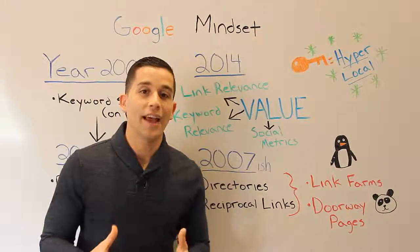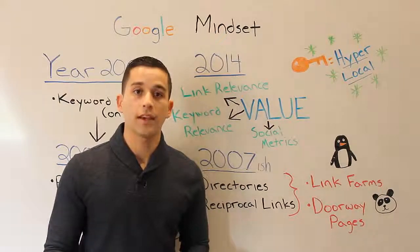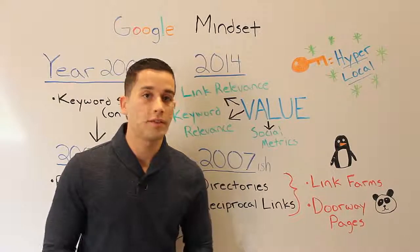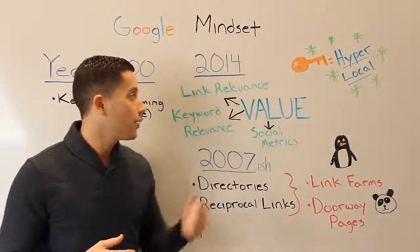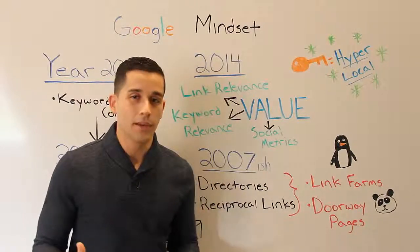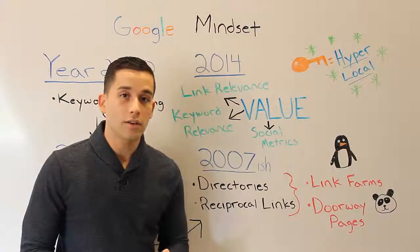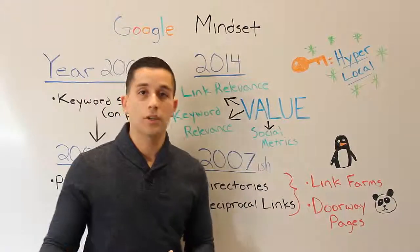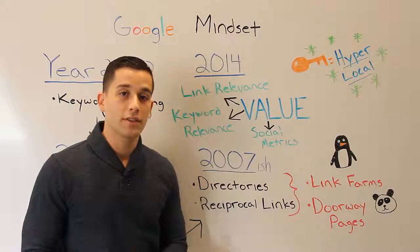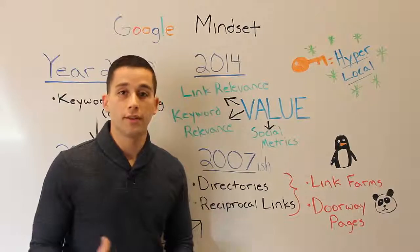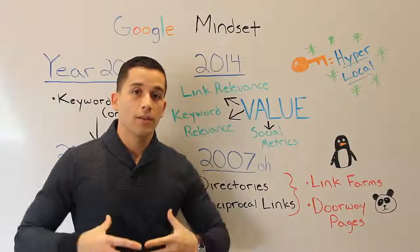The mentality you need to have is to focus on value — how do I provide value to the people coming to my site? These are people looking to buy, sell, or invest in homes, and other real estate agents. When you focus on value instead of manipulation, good things happen naturally: people stay on your site longer, relevant sites link to your content, your keywords appear naturally, and people share your stuff on Facebook, Twitter, and other social networks.